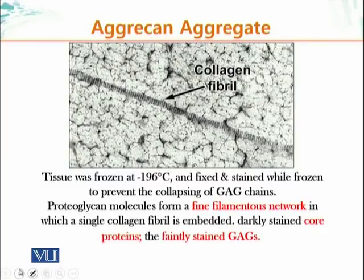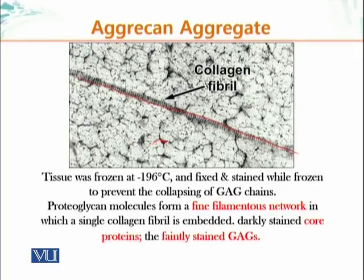Here is another electron micrograph. This is a collagen fibril, and around it there are GAG molecules like proteoglycans. The darker region is basically the protein region, and the lighter part is the carbohydrate domain. You can see these gray or lightly stained little strings — these are the carbohydrate moieties — while the darker areas are the proteins.